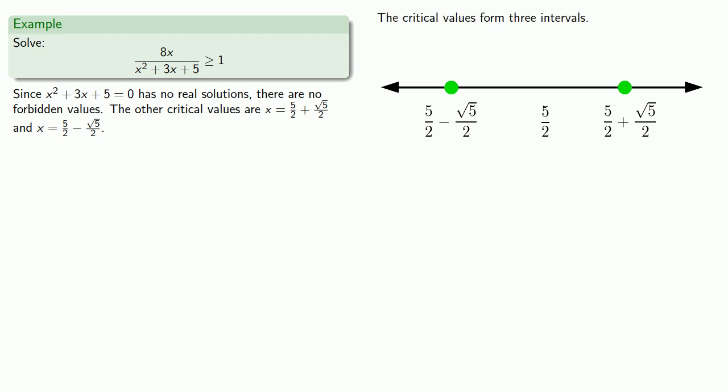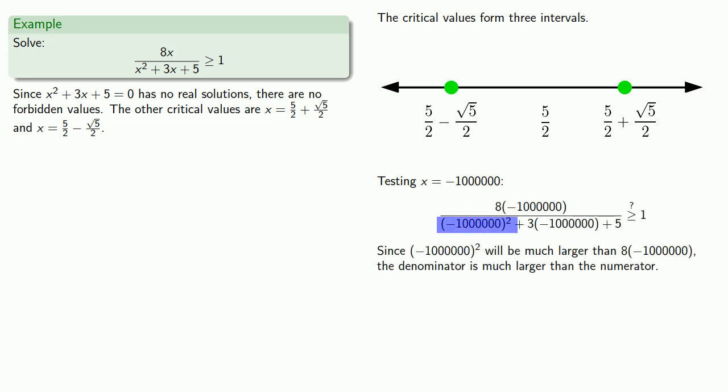So our first interval includes everything to the way left, and so we might test x equals minus 1 million.